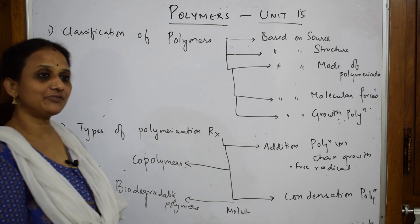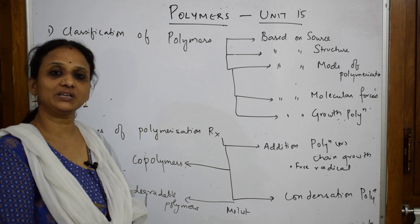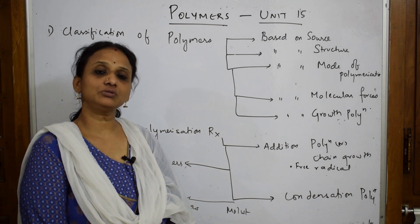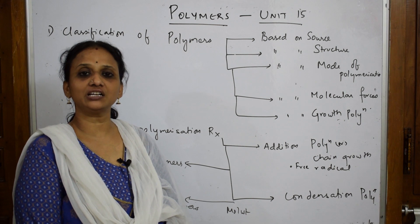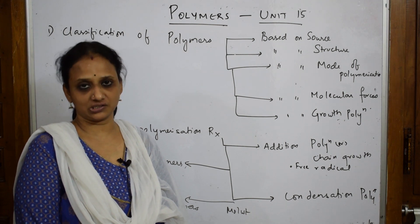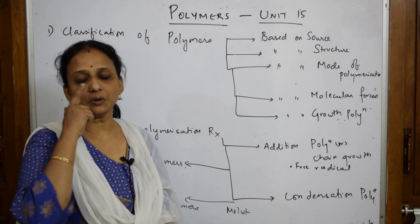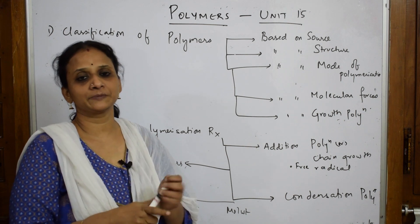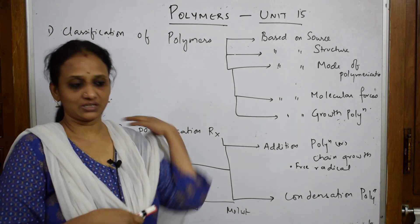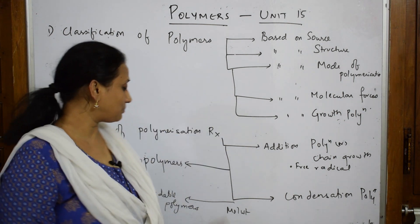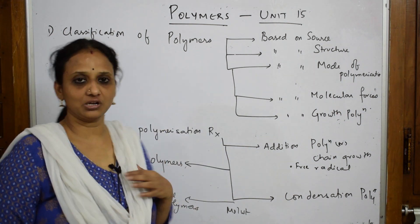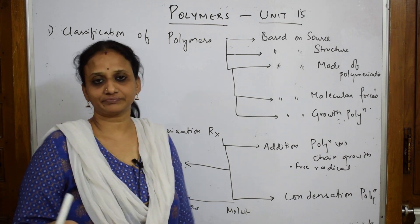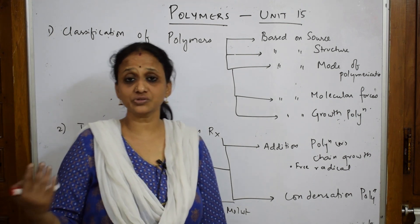From this chapter you'll be getting two types of questions. They will give you the polymer and you need to write the monomeric units — both the two different monomers. That is one type. Or they may ask about biodegradable polymers, or the uses of any of these compounds.